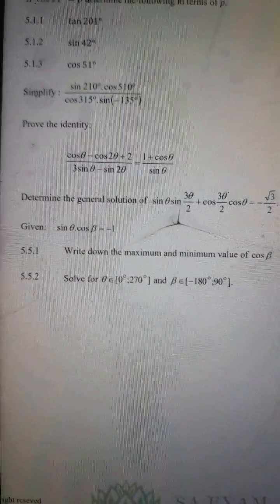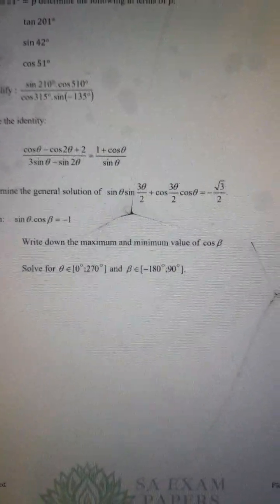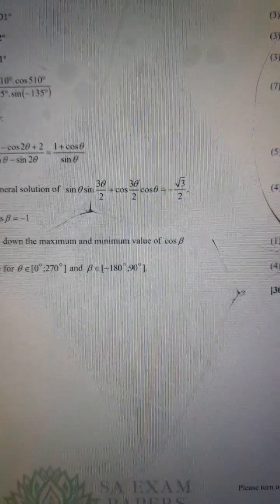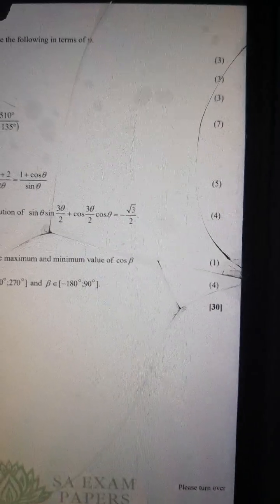Let's go to 5.5.2. You can answer the first question by drawing. They said solve for theta where 0 to 270, and beta negative 180 to 90. That's the domain we're given, so let's follow the restriction.